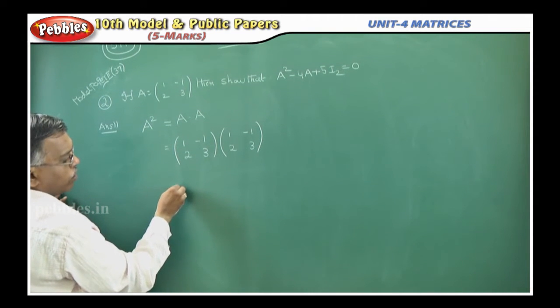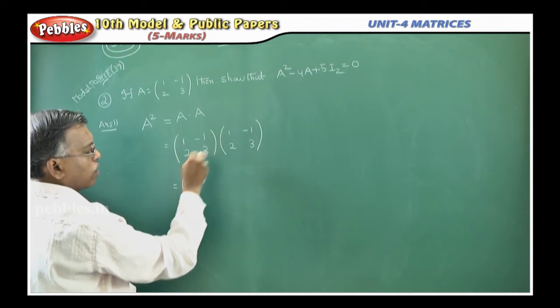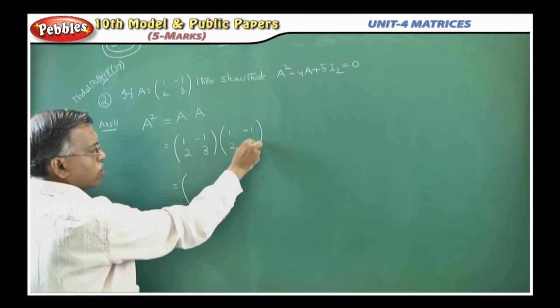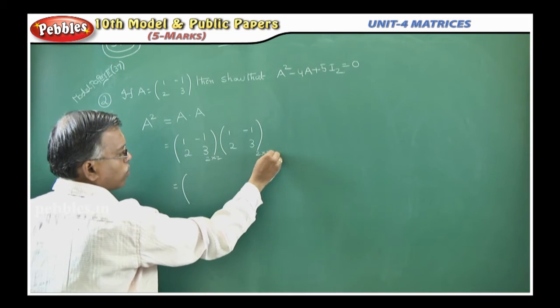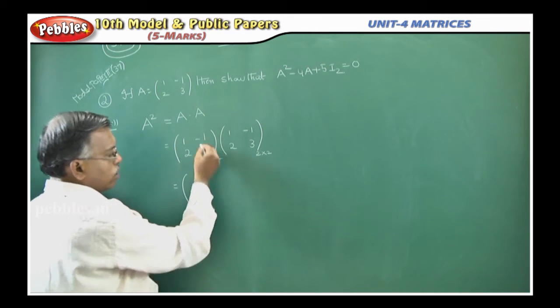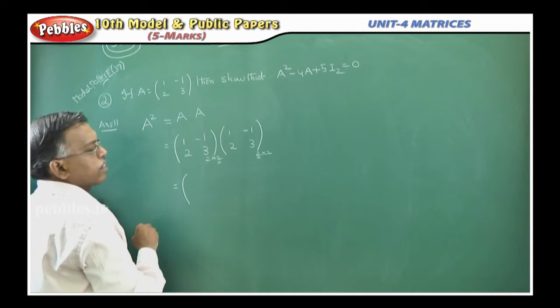You know how to multiply two matrices. First row, first column, again first row, second column. What is the order? This is 2 by 2, this is 2 by 2. For multiplication, the number of columns in the first matrix should be equal to the number of rows in the second matrix.